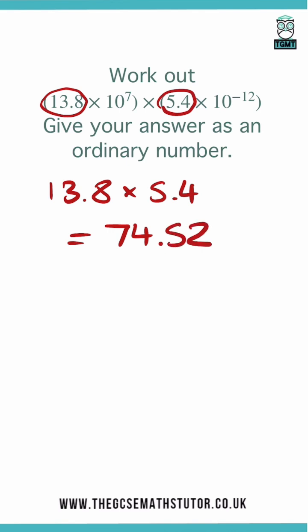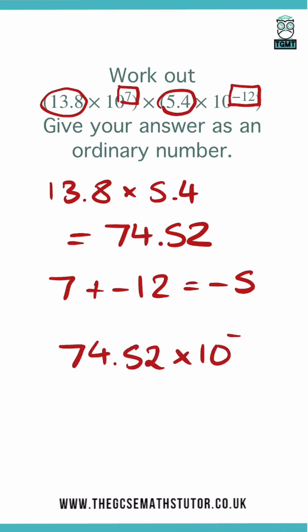The next thing that we do when we're multiplying is we're going to add these powers. So we have a power of 7 add a power of negative 12. 7 add negative 12 is equal to negative 5. So if we put this all together, we get 74.52 multiplied by 10 to the power of negative 5.